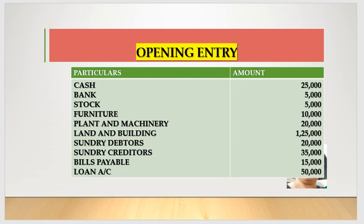Here in the question, we have to assess the cash flow. Cash is 25,000, bank is given, stock is given, furniture is given, plant and machinery is given, land and building is 25,000, sundry debtors is 20,000. Now look here - what are our assets? And this is our liability. Sundry creditors: 35,000. Bills payable: 15,000. And loan account: 50,000. Here we have no capital given.